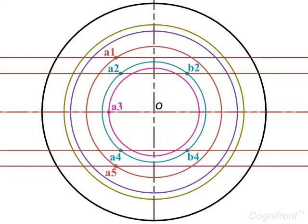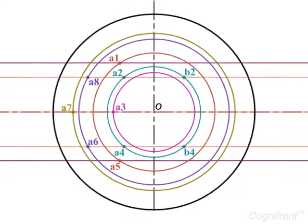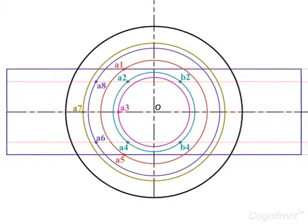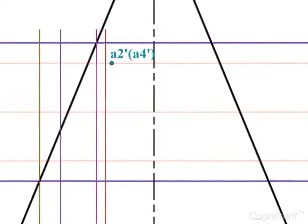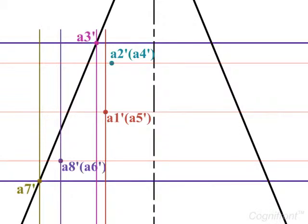Continue projecting to obtain points A5, A6, A7 and A8 in the top view. After that, project these points onto the front view to obtain the points A1-dash, A3-dash, A8-dash and A7-dash.